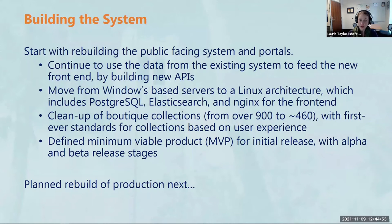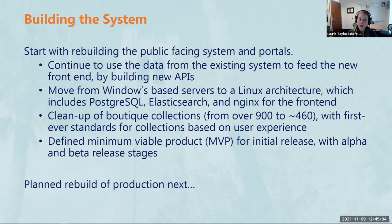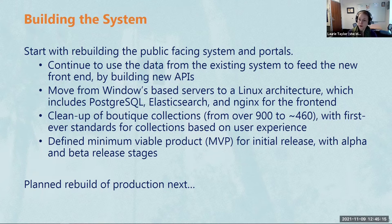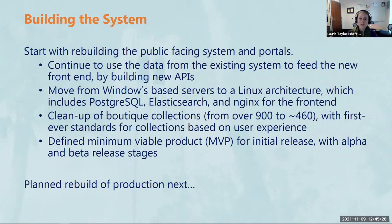We focused on our target objectives for the initial release. To prevent feature bloat, we defined a minimum viable product for the initial release, followed by alpha and beta release stages. We have a large list of future refinements and enhancements to be worked out over the years to come, and we'll be scheduling those on a roadmap for quarters one through four for 2022 and 2023. Our next major undertaking is reimagining the back-end production systems and workflows to modernize them, and working on the patron site has taught us a lot about production and workflow changes to come.